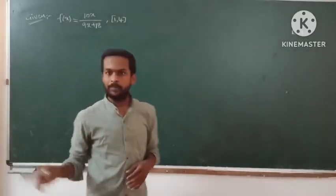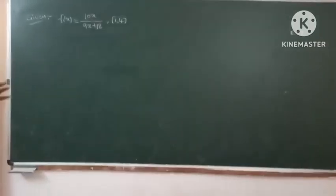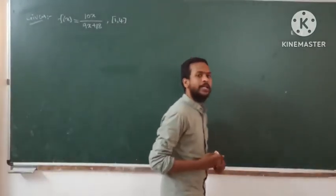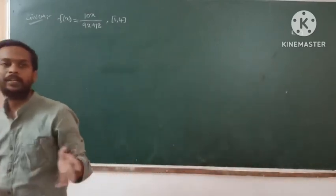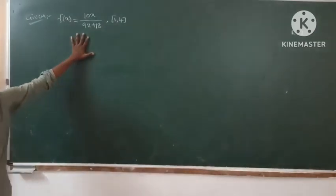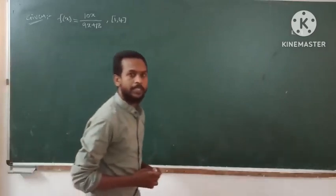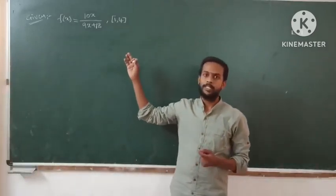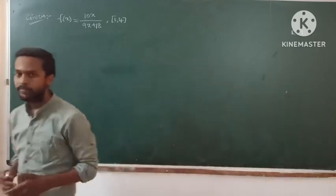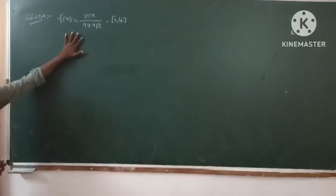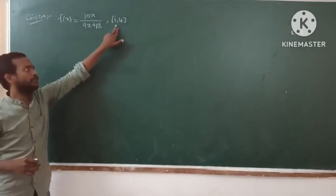The problem is f(x) = x/(9x + 18), and the interval is (1, 4). By using any mean value theorem, we have to determine the value of c — where the first derivative of the given function exists. We have three types of theorems in this unit: Rolle's theorem, Lagrange's mean value theorem, and Cauchy's mean value theorem.